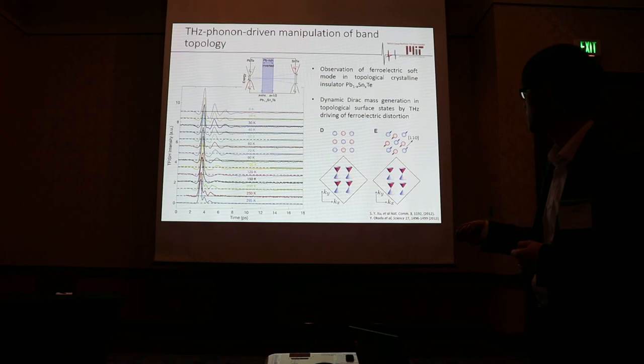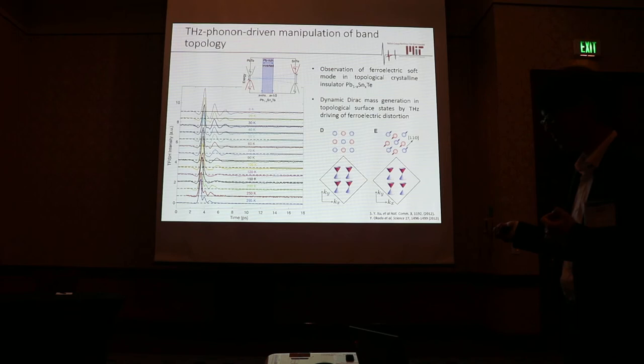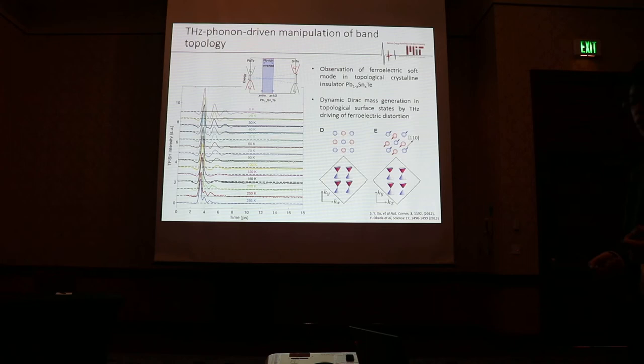It has been shown theoretically that ferroelectric distortions are able to open gaps on the Dirac points of the topological surface states. This will then provide the opportunity to control them on an ultra-fast timescale.